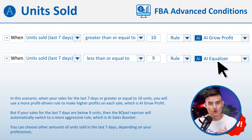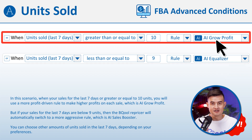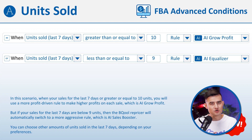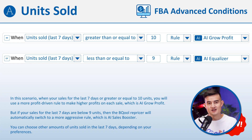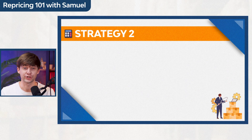Once the number of our sales goes below nine, we switch to repricing more aggressively so that we could sell our items faster. And once the number of our sales goes above 10, the BeCool repricer will automatically switch to AI Grow Profit again. The best part is that you don't need to monitor it yourself and keep checking your sales all the time — our conditional repricer will do it for you. This is a very simple and good strategy to apply, so if it's something you want to use, make sure to take some screenshots.